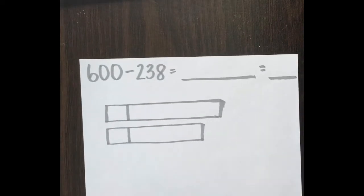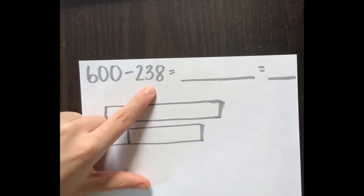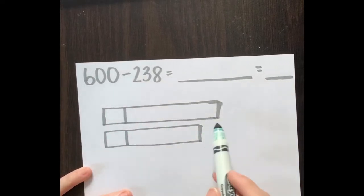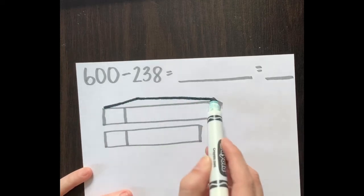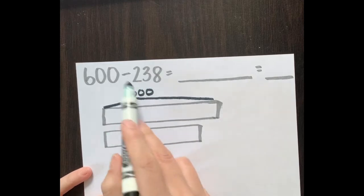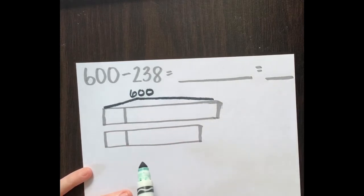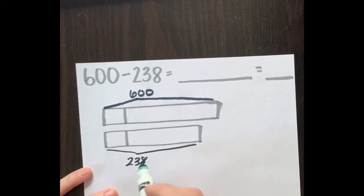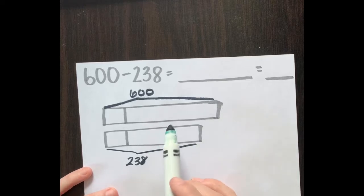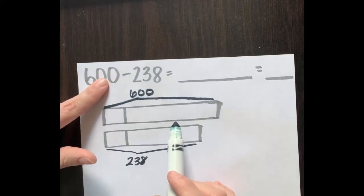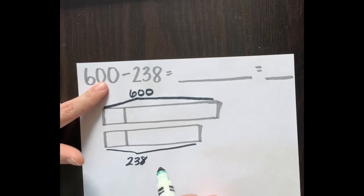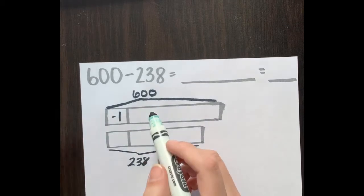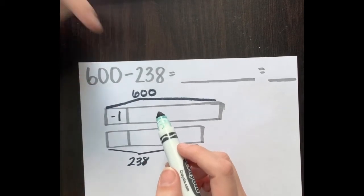Our second example is 600 minus 238. I'll put my first number, 600, in the long box using a caret, and my smaller number, 238, in the shorter box with a caret. Just like before, I want these zeros to be nines, so I'll take away 1. 600 minus 1, counting down: 600, 599.